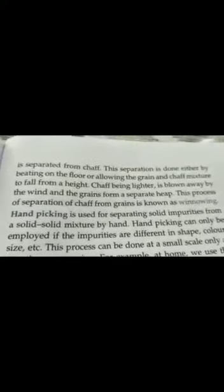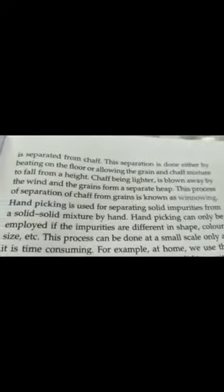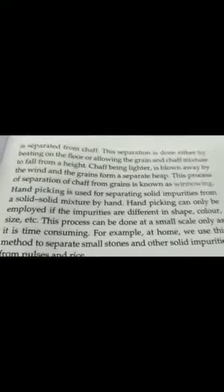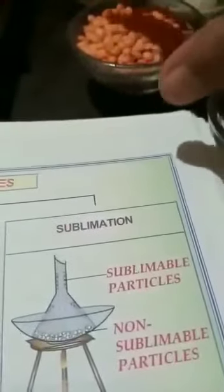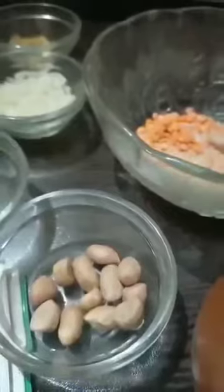The basic principle behind this is the difference in weight between the grain and the chaff. Another method we use for separating solid impurities from a solid mixture is hand picking. Hand picking can only be employed if the impurities differ in shape, color, size, etc. We use this process for small-scale separation at home. I have taken a mixture of different things — peanuts, lentils, rice — all differing in shape, size, and color, and we can see the difference visually.